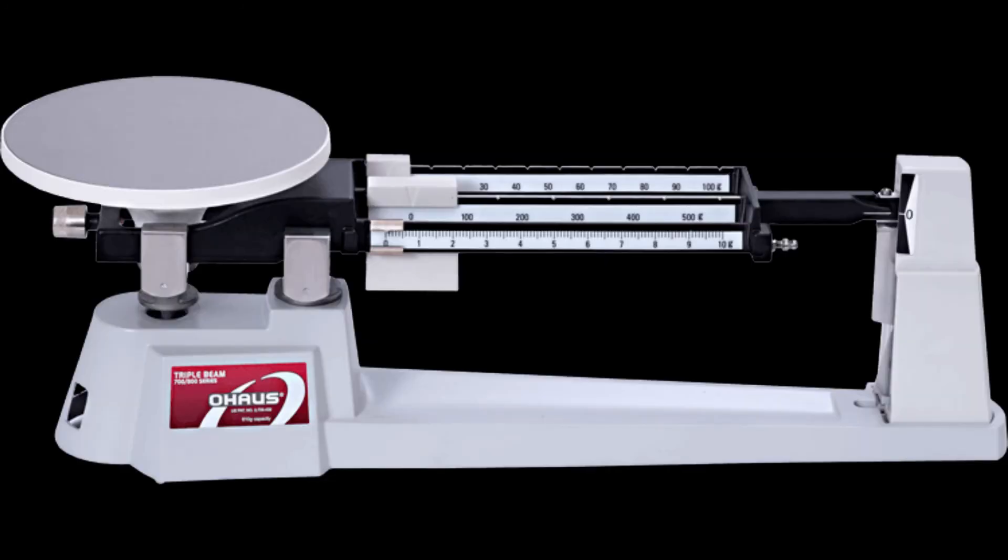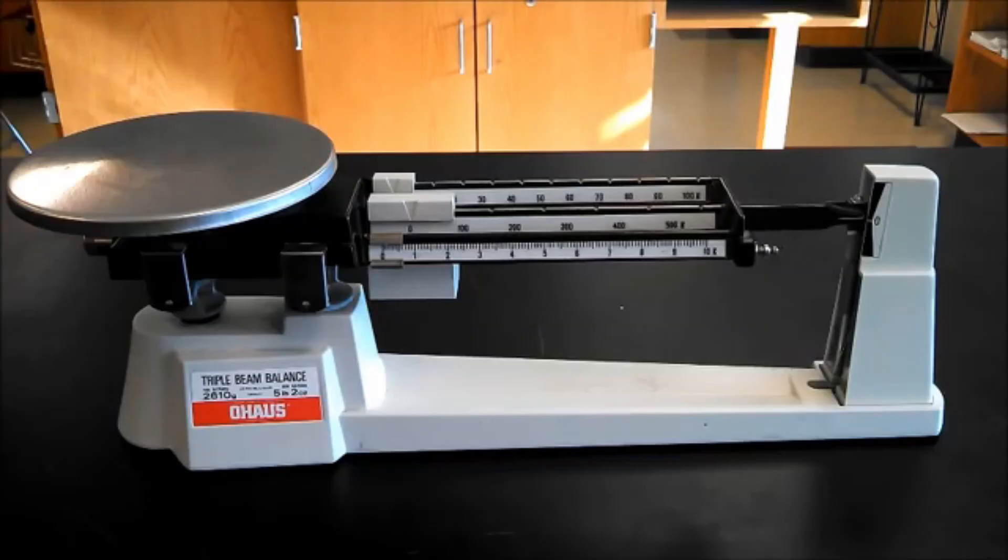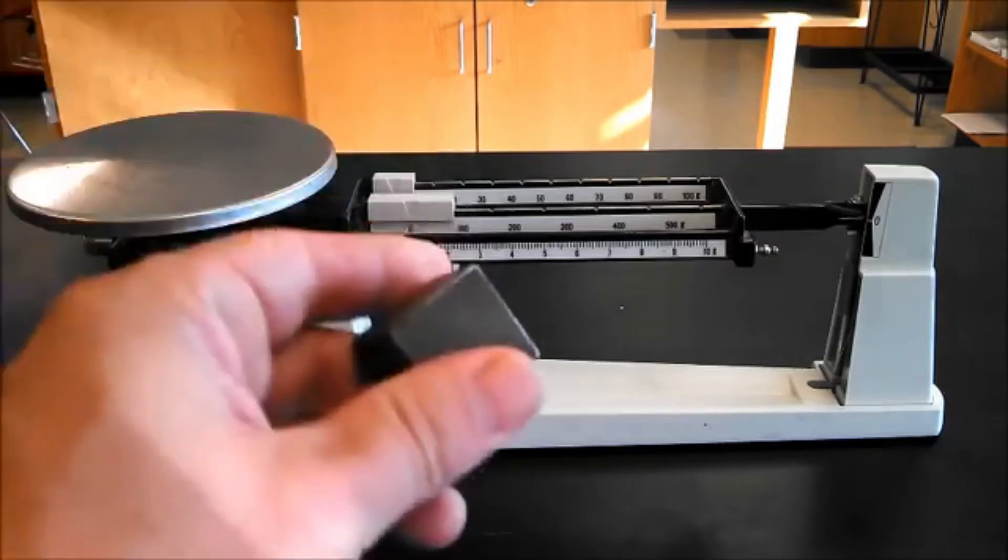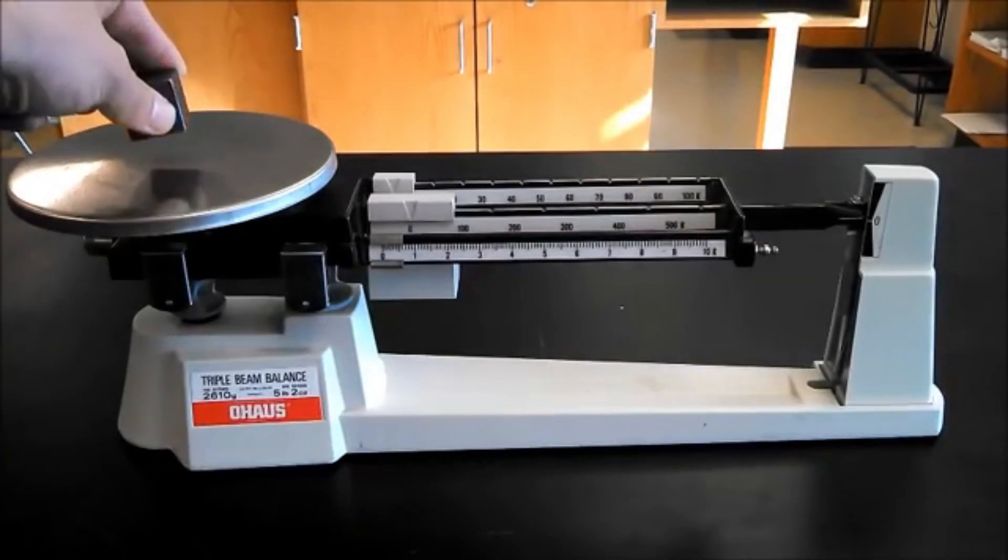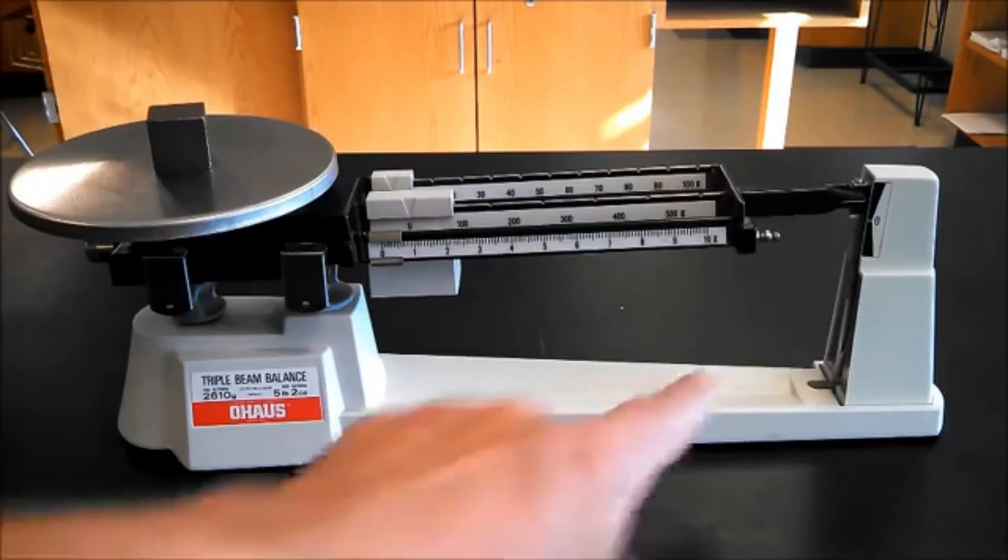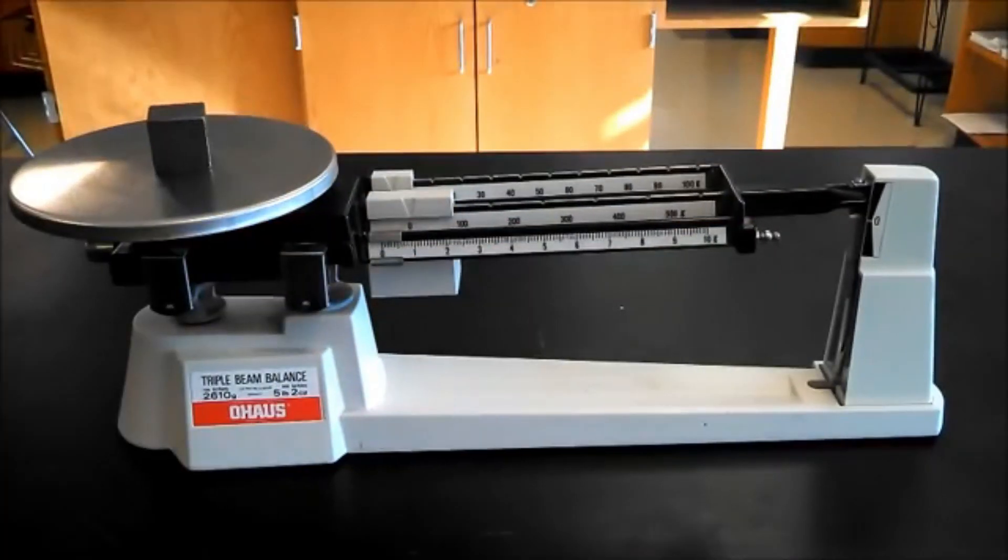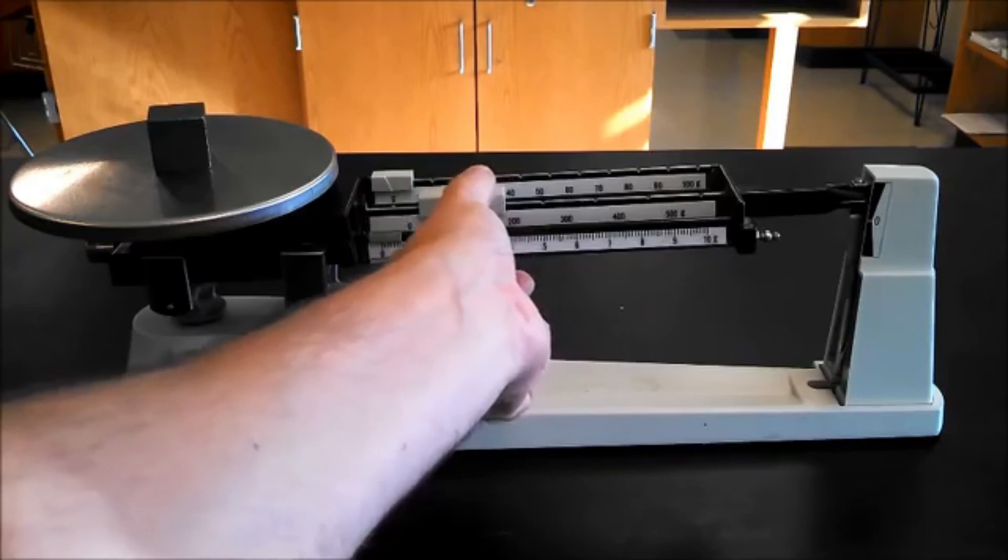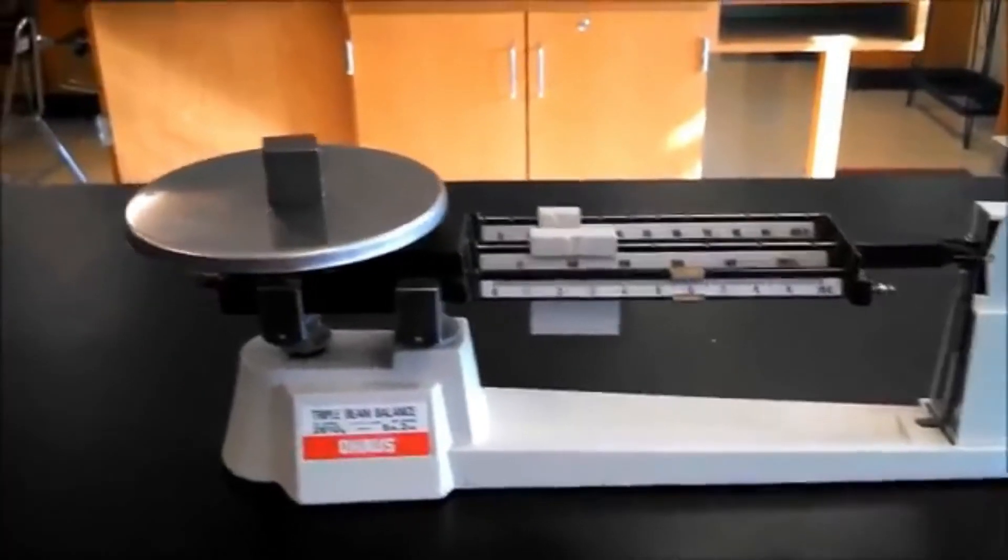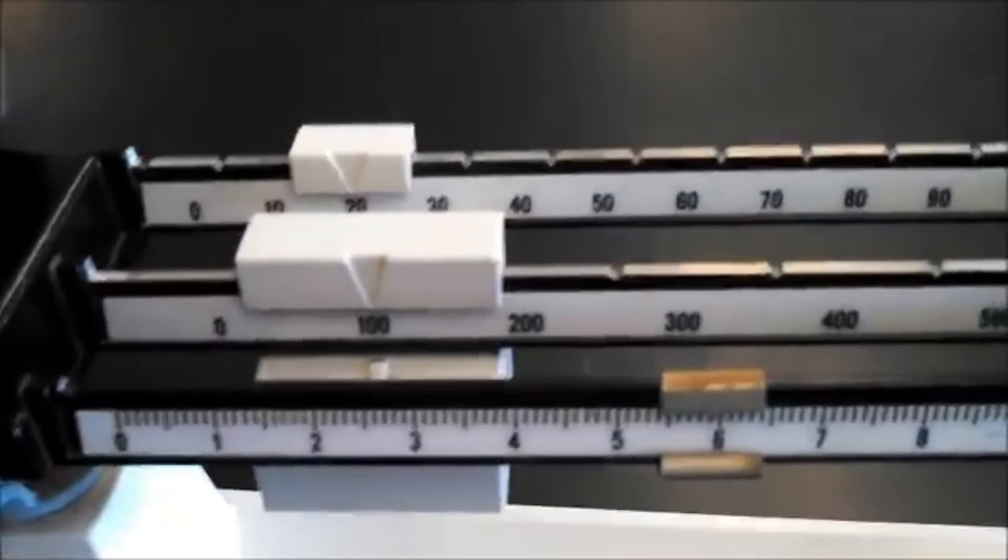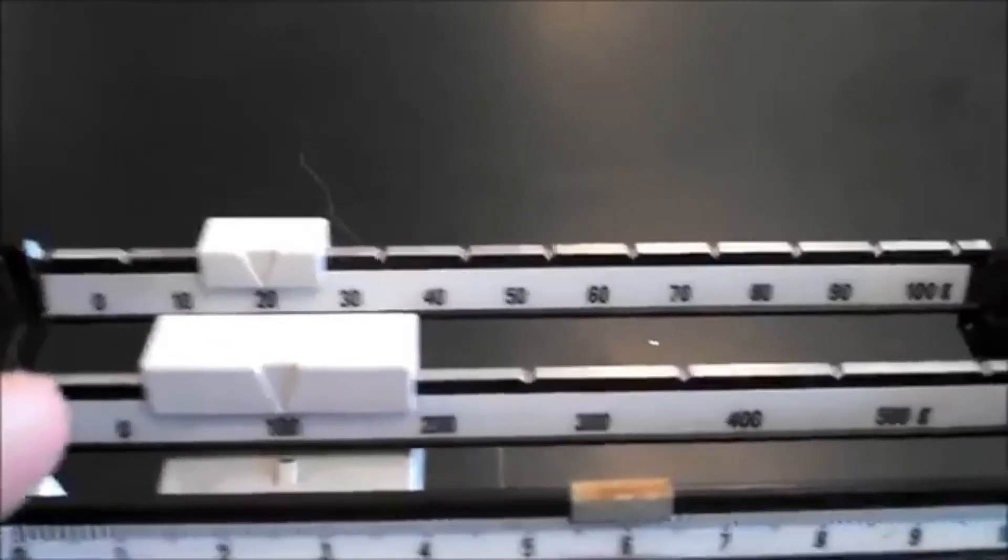Triple beam balance is the equipment that we use to measure mass in laboratory. It is composed of three beams, therefore it is known as a triple beam balance. First we need to make sure that the arm lines up with zero. When we place a weight on the balance, the arm jumps up due to the mass of the object. Then we need to bring the arm back to the zero point by moving the weights along the beams like this. After bringing it back to the zero position, we can read the mass of the object. As shown in this video, the mass of the object is 125.9 grams.